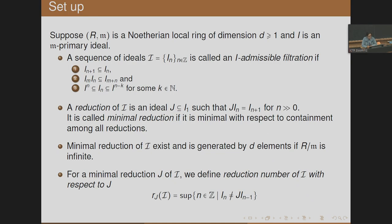Throughout the talk, R is a Noetherian local ring of positive dimension and I is an M-primary ideal. A sequence of ideals is called an I-admissible filtration if it satisfies three properties: the first says it is a decreasing filtration, the second is the multiplicative property, and the third is what makes it I-admissible.